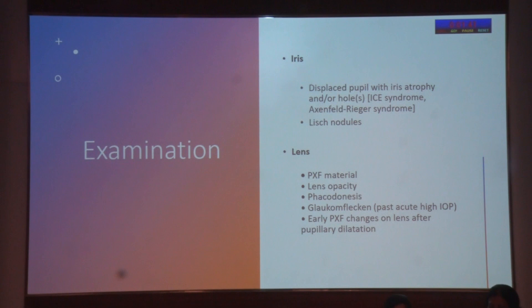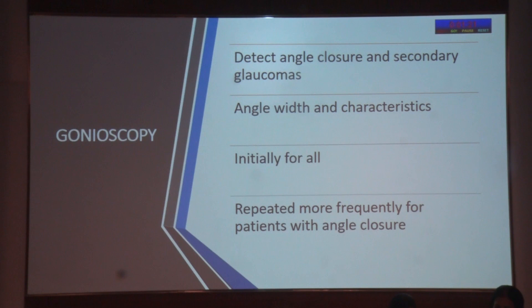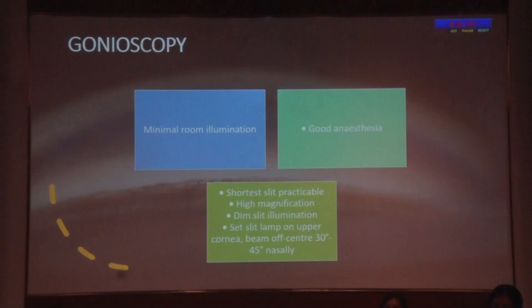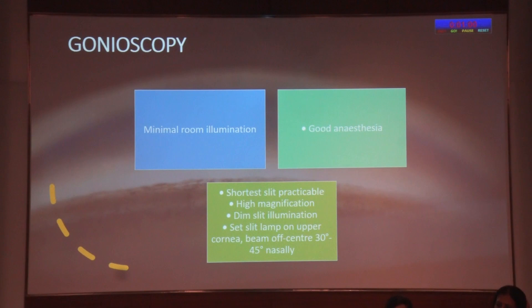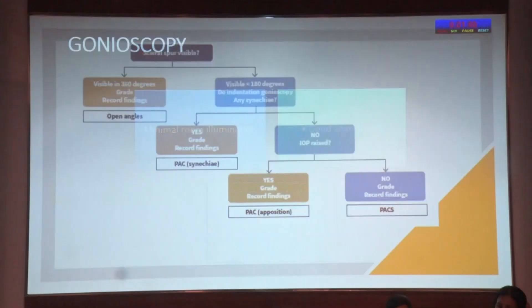In the lens, look for PXF material, lens opacity, phacodonesis, glaukomflecken, and early PXF changes visible after pupil dilation. Gonioscopy is a forgotten art but is important in any glaucoma workup. It detects angle closure and secondary glaucomas. The angle width and characteristics are noted. It is done initially for all patients and repeated more frequently for angle closure. The technique: minimum room illumination, good anesthesia, and dim slit illumination. Look for visibility of the scleral spur and label the angle accordingly.